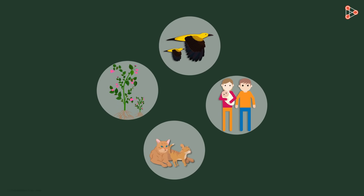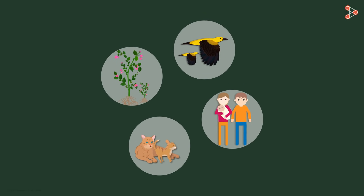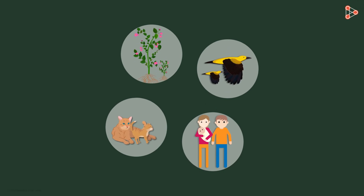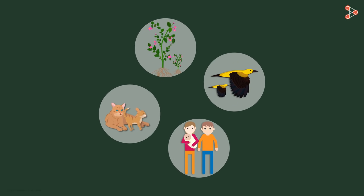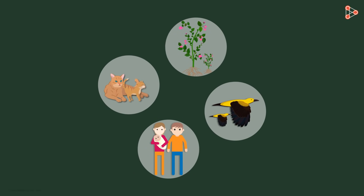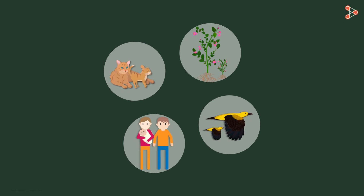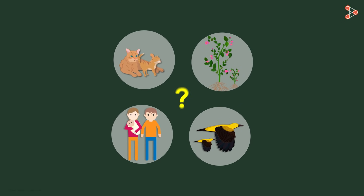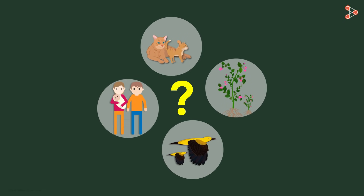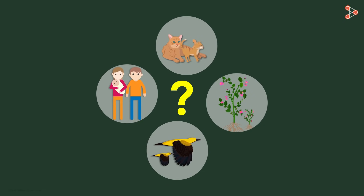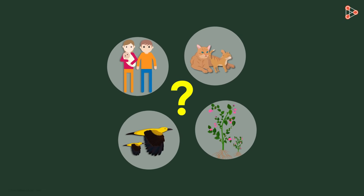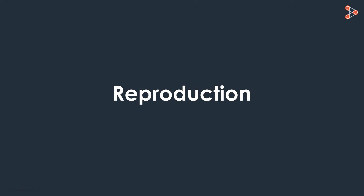All living organisms are capable of giving birth to young ones which are either exactly the same or somewhat similar to them. Can you tell me what this process of giving birth to an offspring is known as? The process is called reproduction.